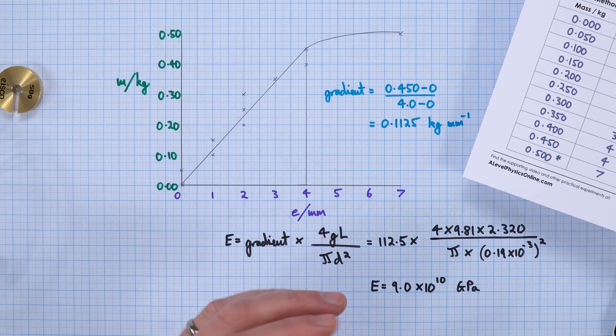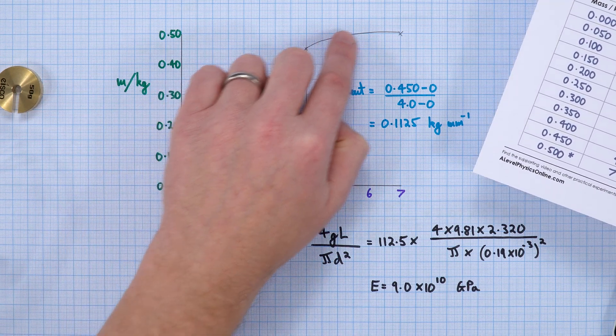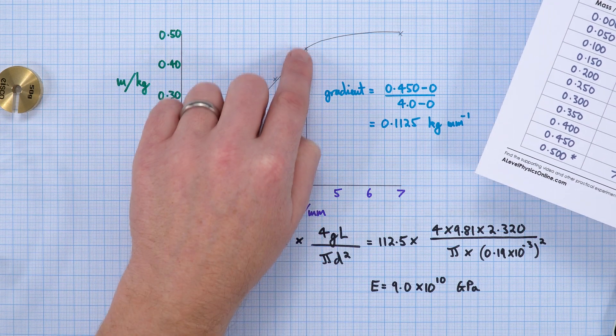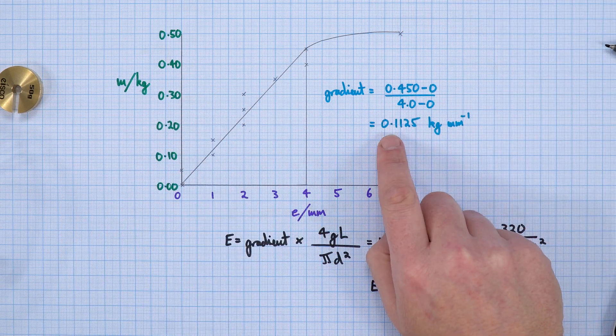The Young modulus is the ratio of stress to strain, and it's this initial linear region. Although the line starts to curve, I only took the gradient for the first part of the graph. My gradient in this case was 0.1125 kilograms per millimeter.